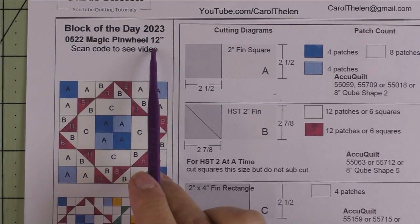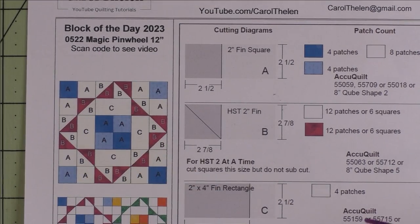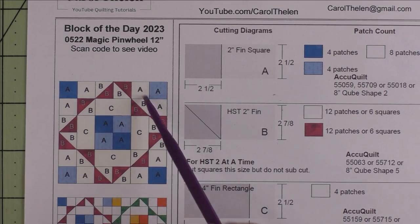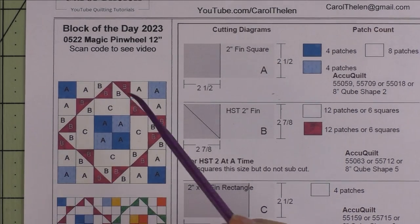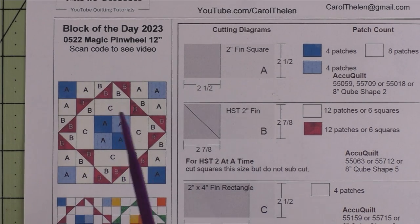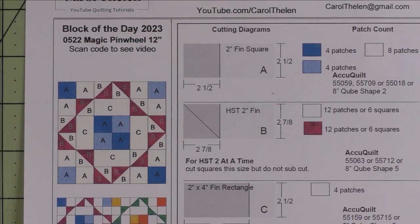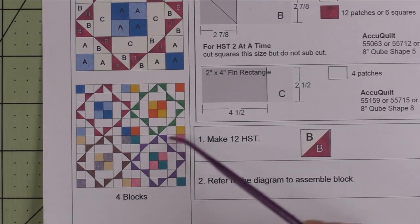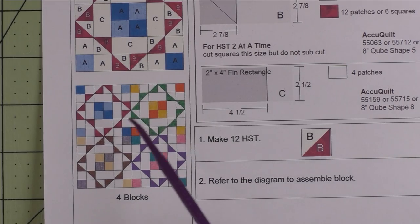This is the magic pinwheel block that finishes at 12 inches. I like it because it looks like it's wavy but it's really not. It just consists of squares, half square triangles, and rectangles, really easy to cut and really easy to piece. Here's what they look like with four blocks together, and this would be a great scrappy quilt.